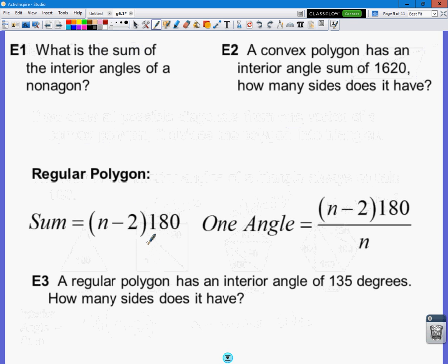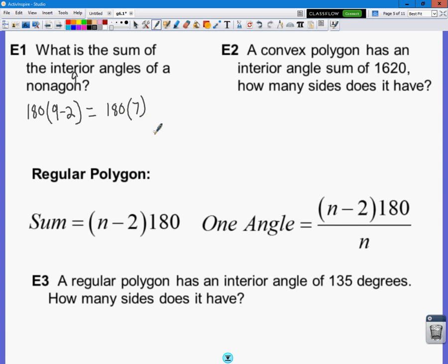What is the sum of the interior angles of a nonagon? How many sides does a nonagon have? Nine. So I'm going to take 180 times 9 minus 2, or 180 times 7. And when I take 180 times 7, I get 1,260 degrees.